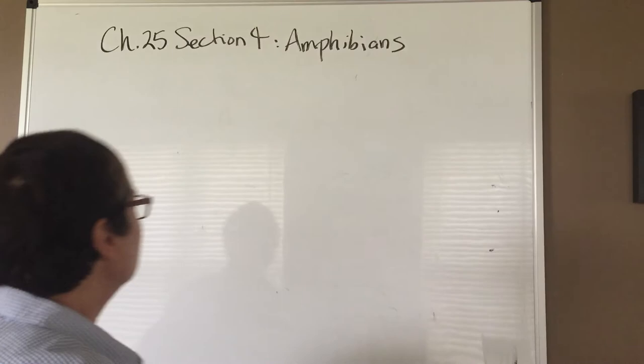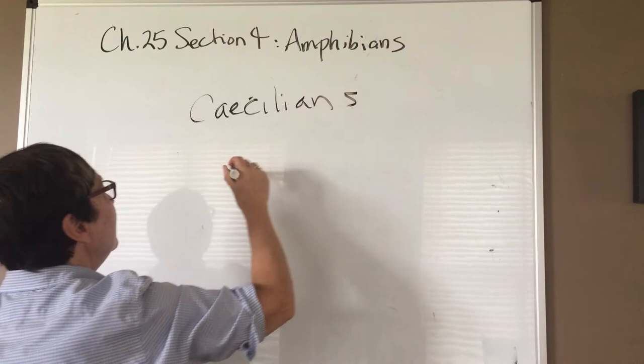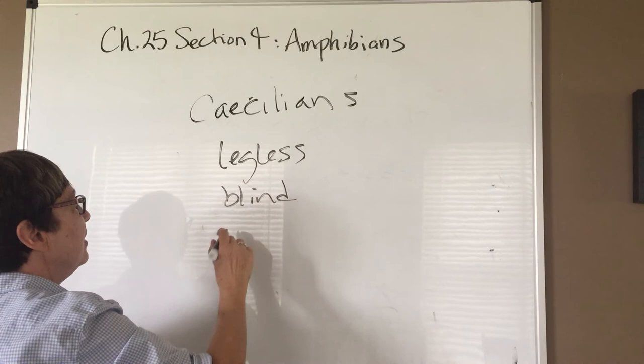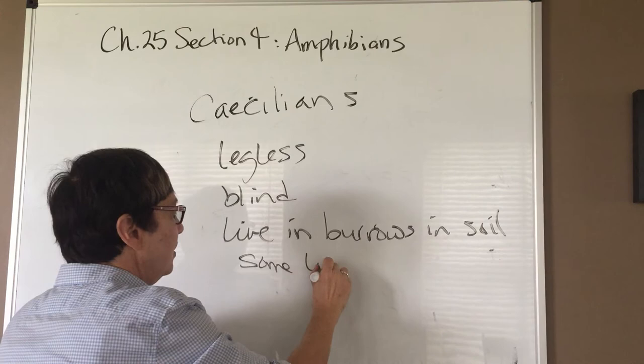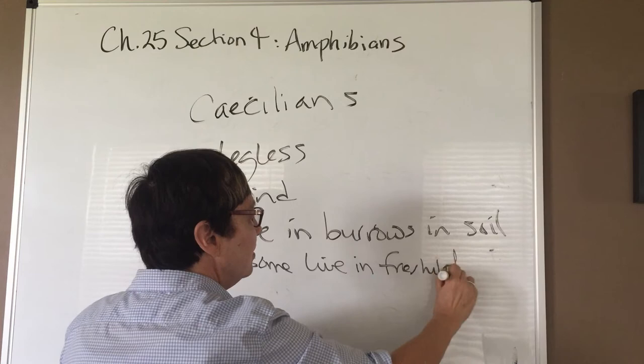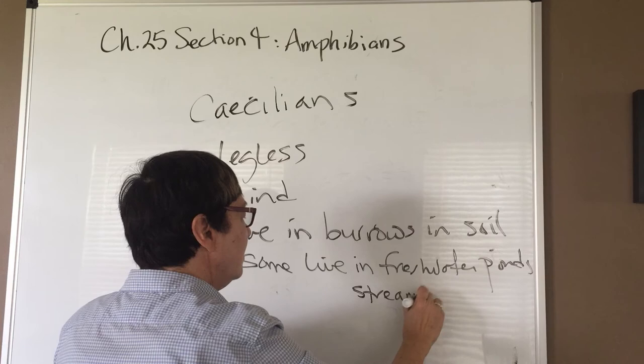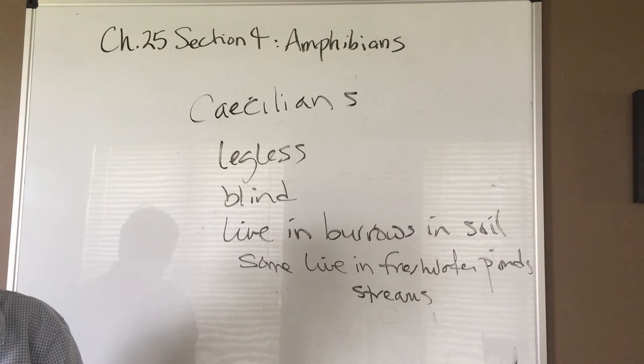The last group is the caecilians, which you've probably not heard of. They are legless and mostly blind, and most live in burrows in the soil. Some in South America live in freshwater ponds and streams. They are likely absent from North America. That covers everything regarding the amphibians; the next group to discuss will be the reptiles.